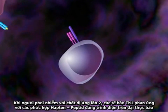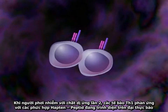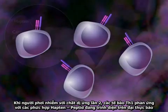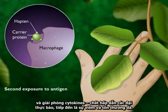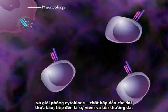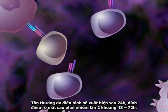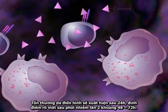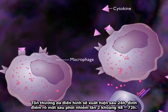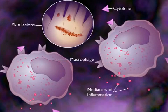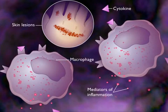When the host comes in contact with the allergen a second time, the TH1 cells react with the hapten peptide being presented on the macrophage and release cytokines, resulting in attraction of more macrophages, followed by inflammation and skin lesions. Characteristic skin lesions appear after 24 hours, reaching their peak at 48 to 72 hours after the second exposure to the plant.